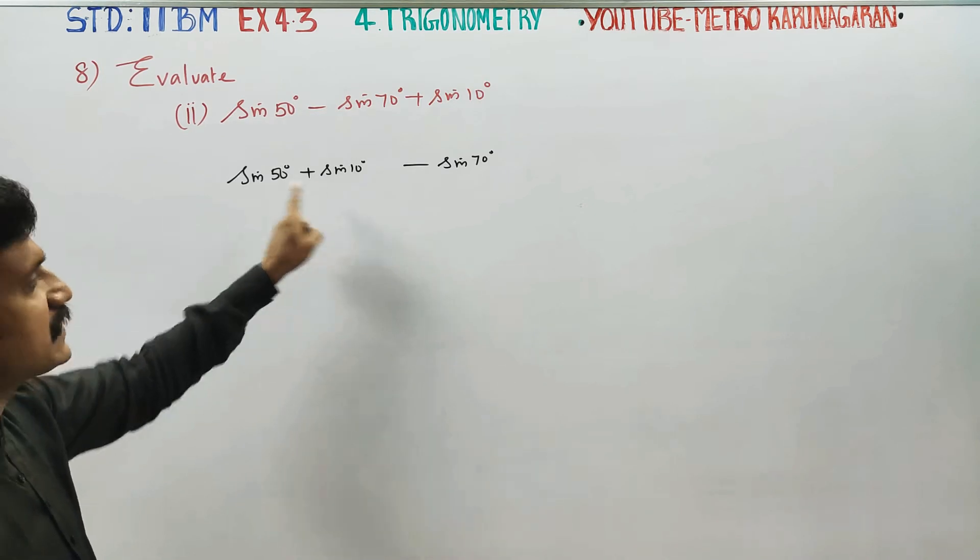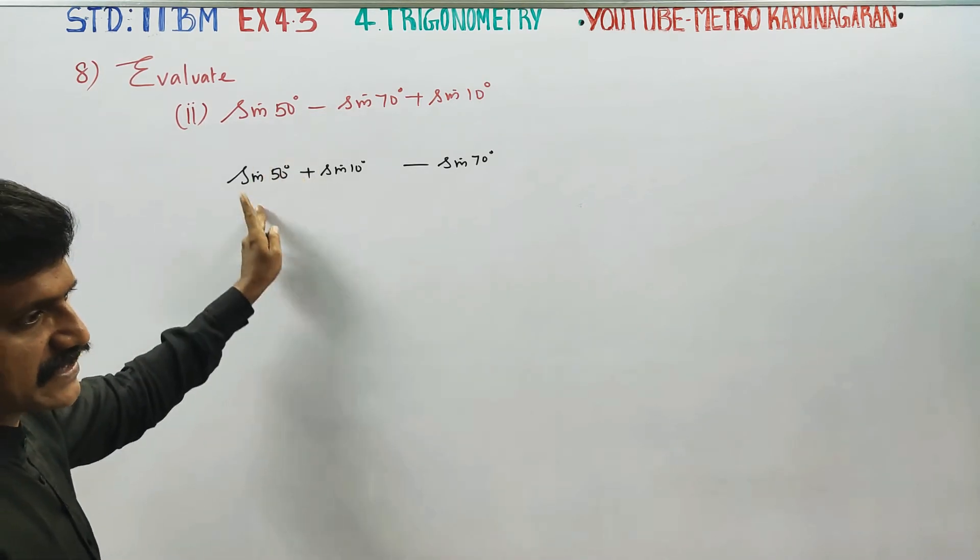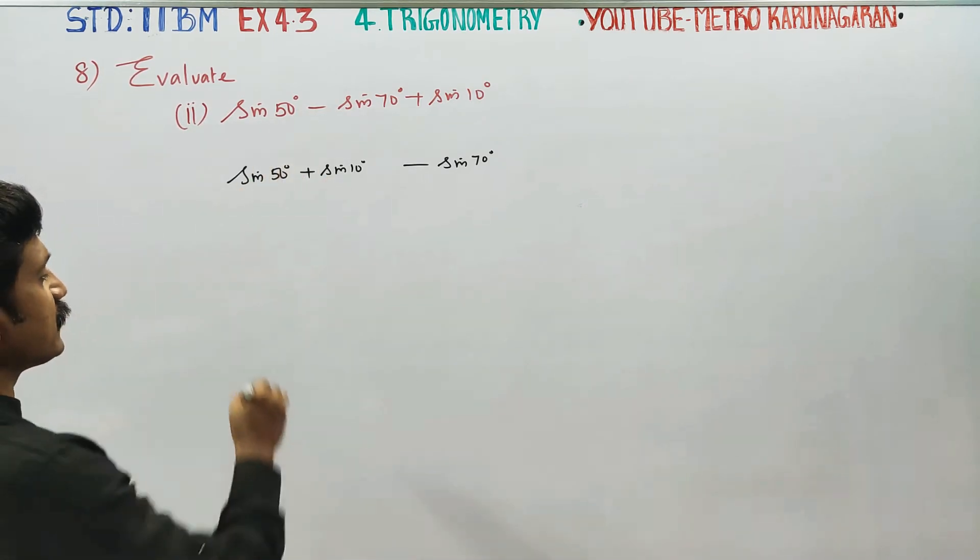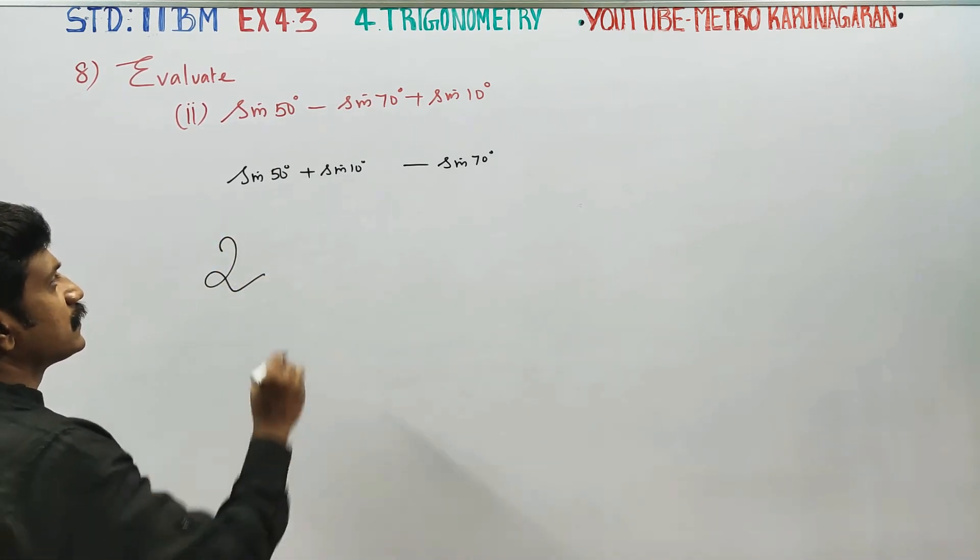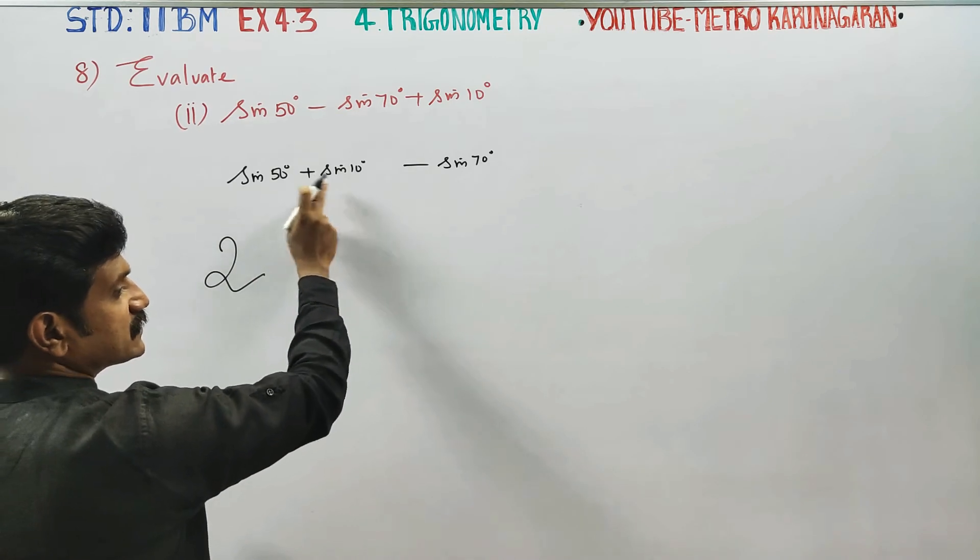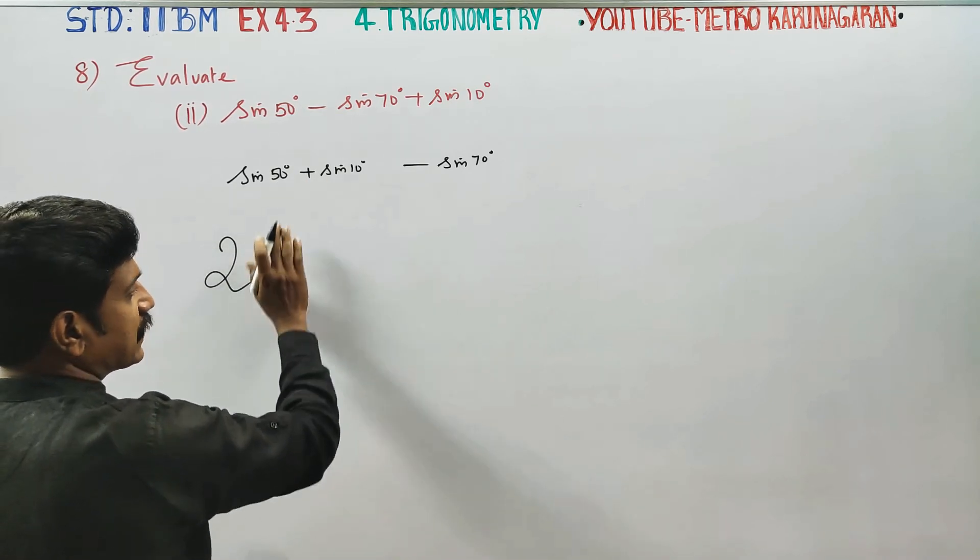Sin plus sin, another sin minus sin. Sin plus sin, sin minus sin will be 2 times. Whether it's addition or subtraction, you'll get a product.